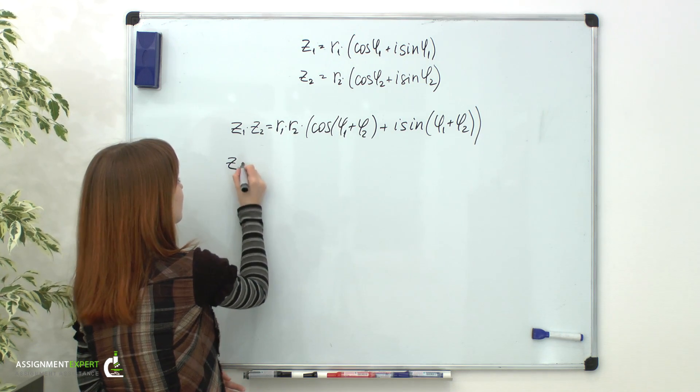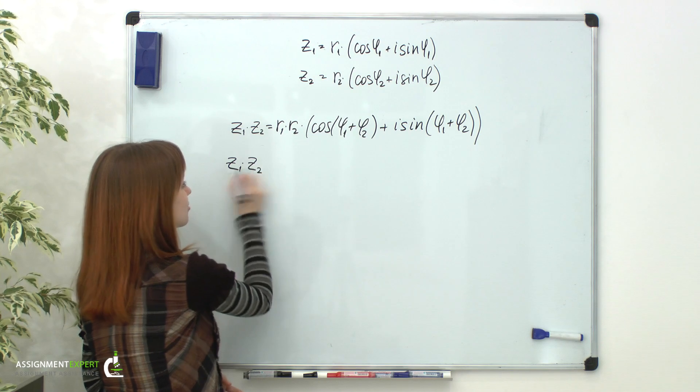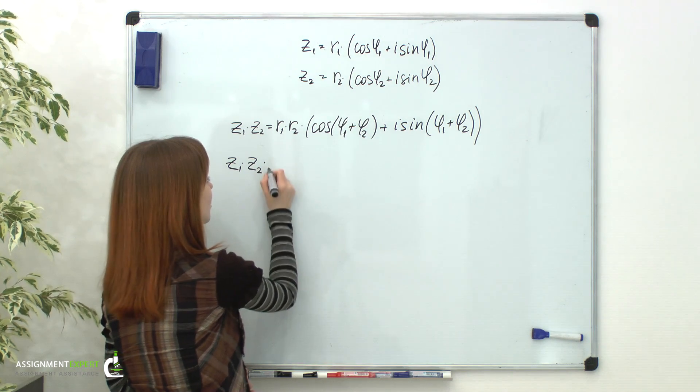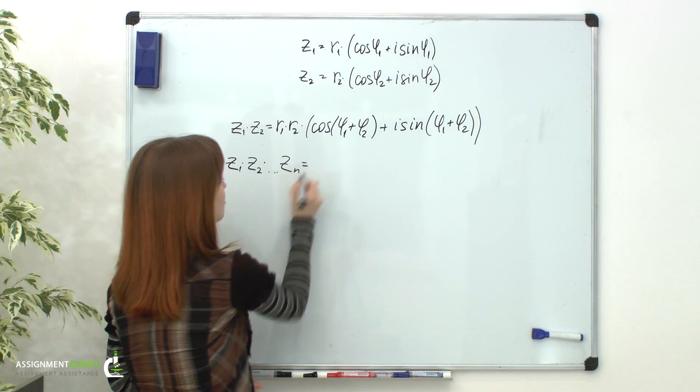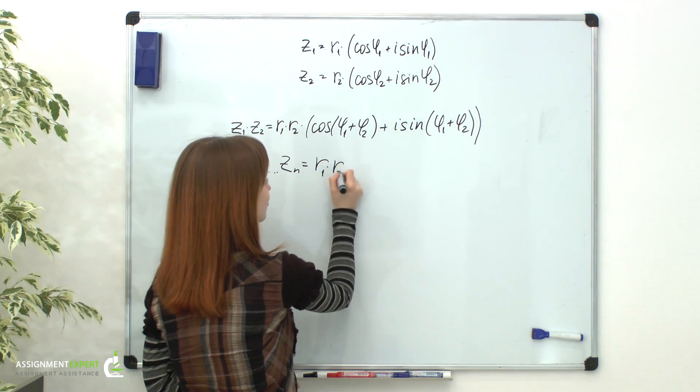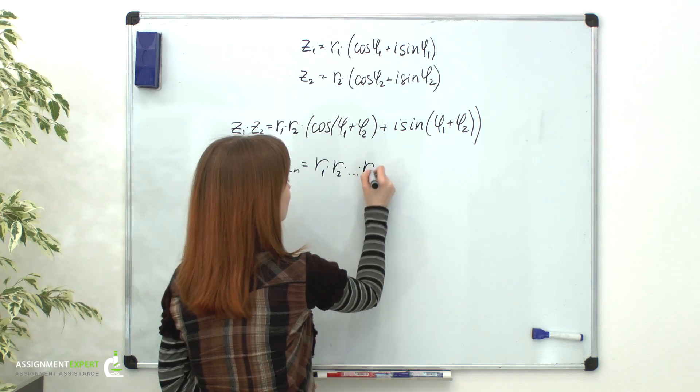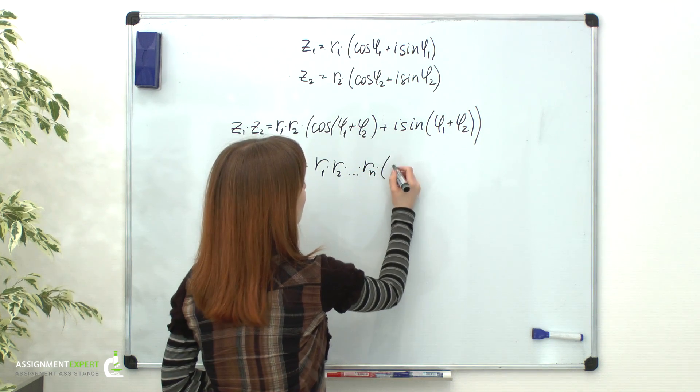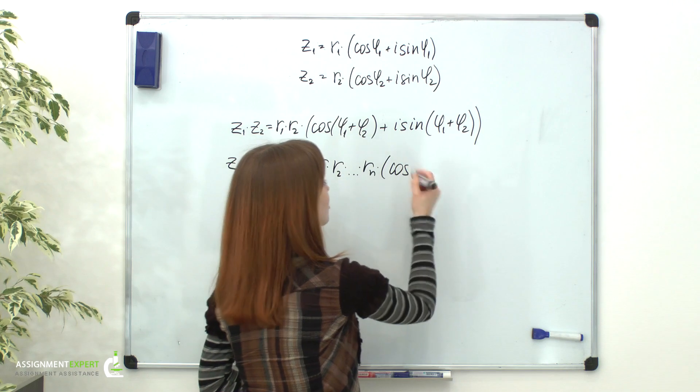So we'll multiply n complex numbers, and for that we'll multiply n of their modules and add n of their arguments.